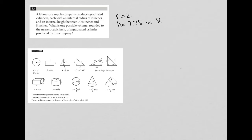What is one possible volume rounded to the nearest cubic inch of a graduated cylinder produced by this company? So we're being asked for the volume. So V equals question mark.